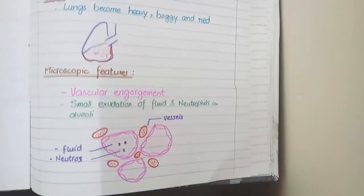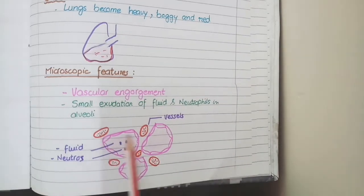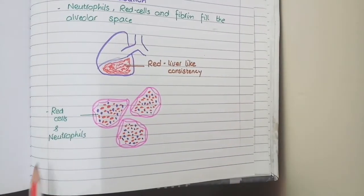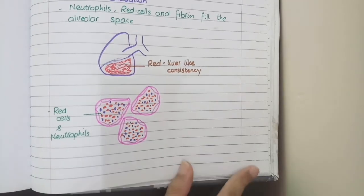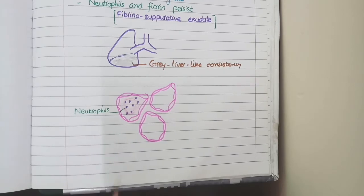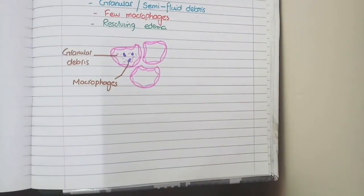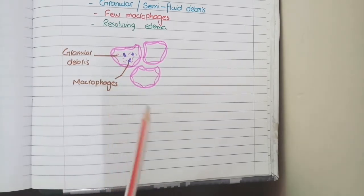Let's briefly revise all four stages of lobar pneumonia. In the first stage of congestion, the main feature is congested vessels. In the second stage of red hepatization, the main features are red blood cells, neutrophils, and fibrin in the alveoli. In the third stage of grey hepatization, there are neutrophils and fibrin in the alveoli — known as fibrinopurulent exudate. In the last stage of resolution, there is granular debris with macrophages that gradually clean up all the material.